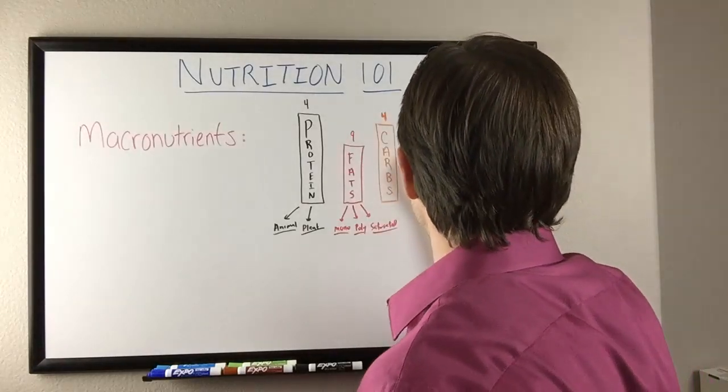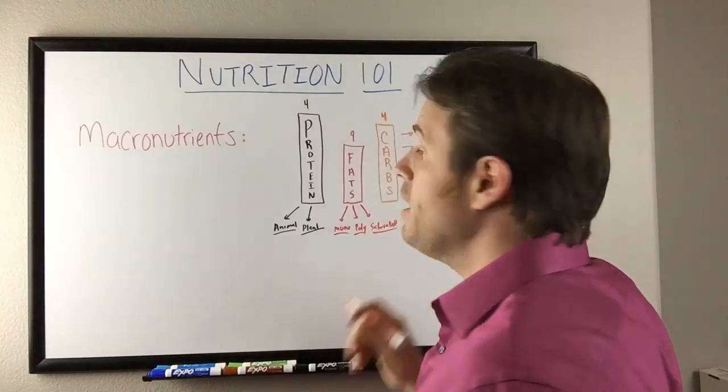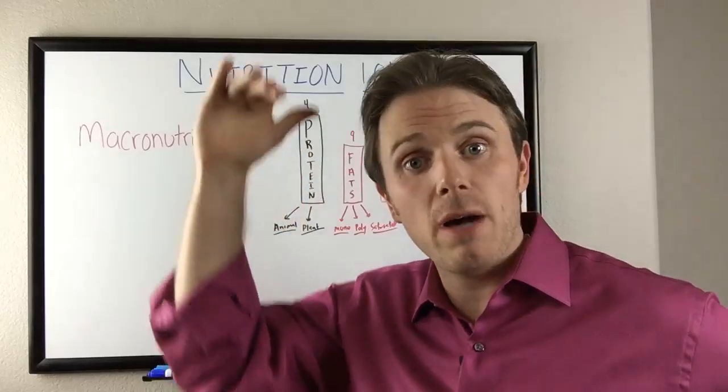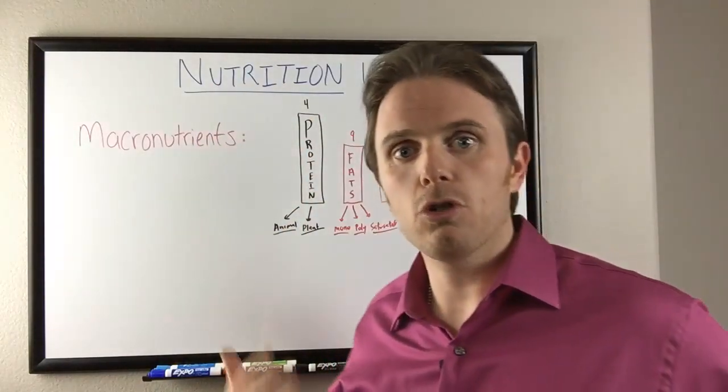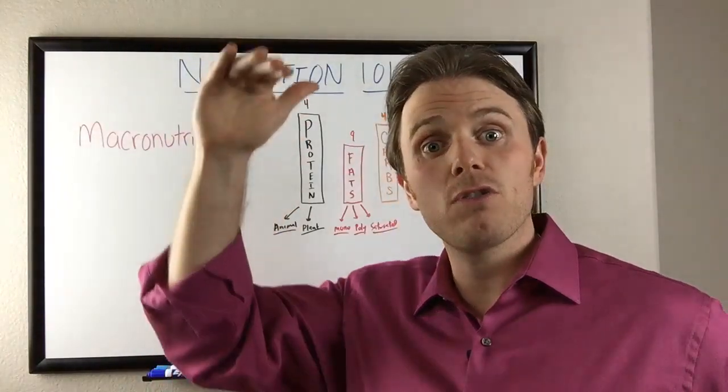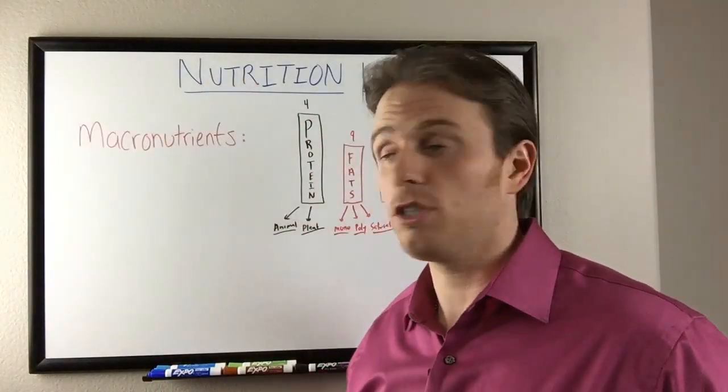Next category we have is starchy. Starchy can be high in nutrition, but it can also be higher in carbohydrates. Sweet potato, yam, jicama, starchy tubers, squash. Some break down the sugar faster or slower. But again, relatively speaking, much higher in carbohydrate, but still relatively high in nutrition as well.